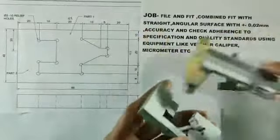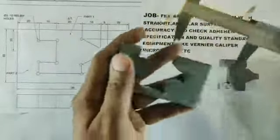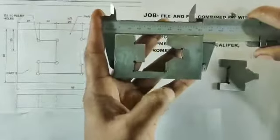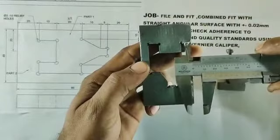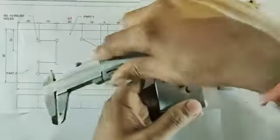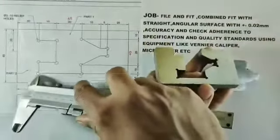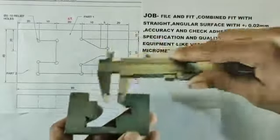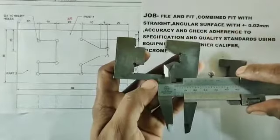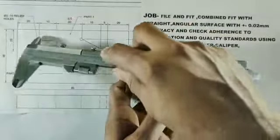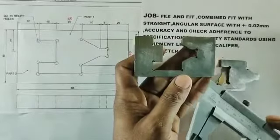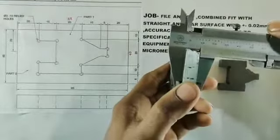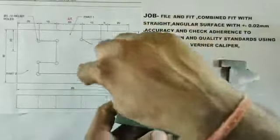इसी परकार part number two job को भी दिये गई drawing के अनुसार complete करते हैं. Dimensions: 85 mm, 48 mm, 10 mm, 20 mm, 10 mm, 30 mm, 5 mm. और 6 relief hole — 1, 2, 3, 4, 5, 6 — 3 mm का drill machine की साहिता से drill करके complete करते हैं. Part number two job की मोटाई को भी 11 mm में finish करते हैं. इस परकार हमारा part number two job भी दिये गई drawing के अनुसार complete होता है.